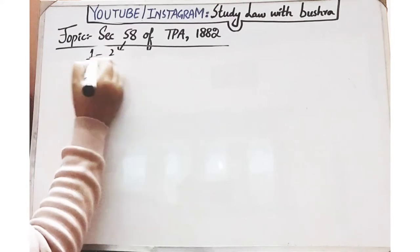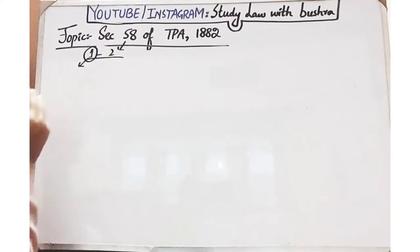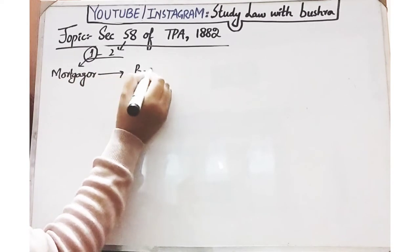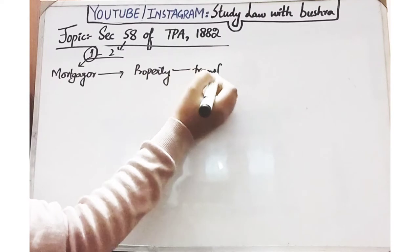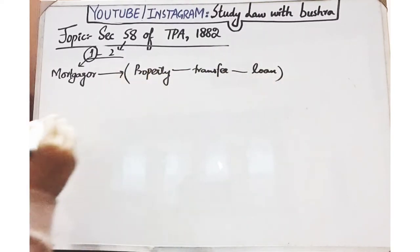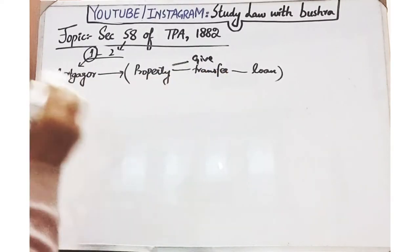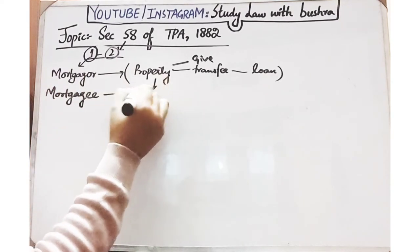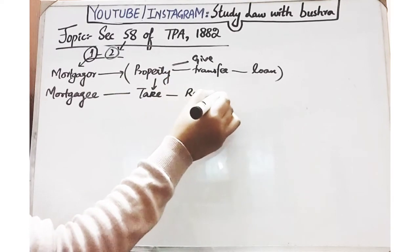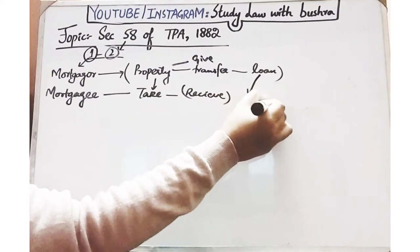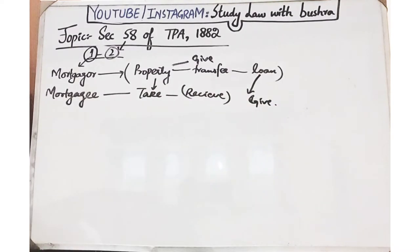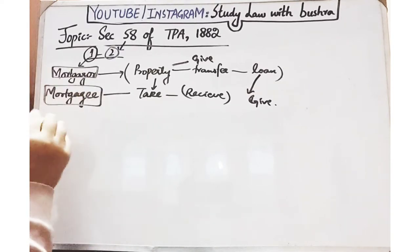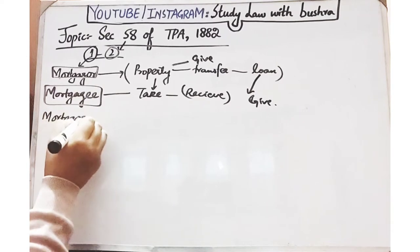Jab hum ne baat ki ke ek bhanda dusare ko apni property transfer karta hai, to yeh dene wala bhanda kaun hai? Section 58 kehta hai ke woh bhanda jo apni property kisi dusare bhande ko transfer kar raha hai as security of loan, us bhande ko hum kehte hain ke woh mortgagor hai. Aur joh mortgagor se property receive kar raha hai aur property receive karne ke badle woh pahle bhande ko loan de raha hai, to that person is called mortgagee. Yani mortgagor property de raha hai aur loan receive kar raha hai; mortgagee property receive karta hai aur loan deta hai.